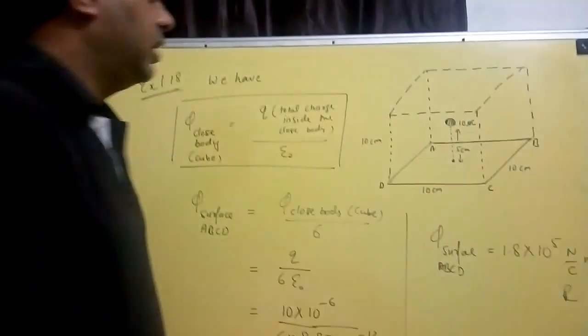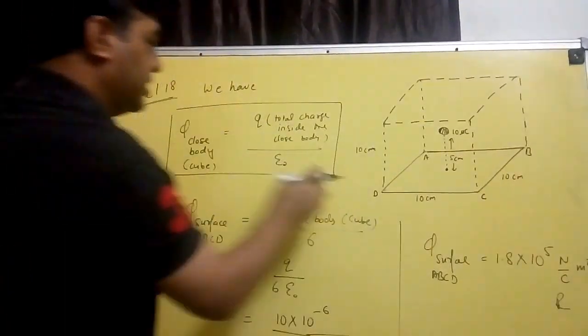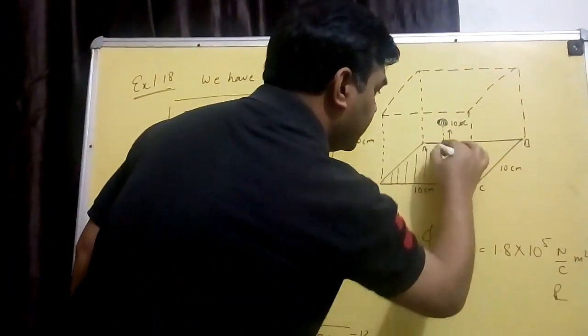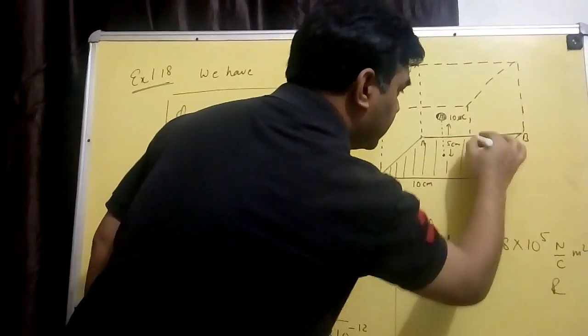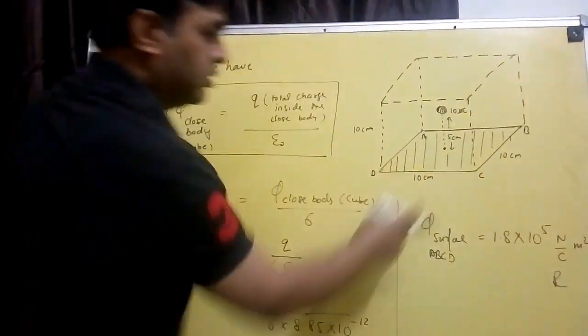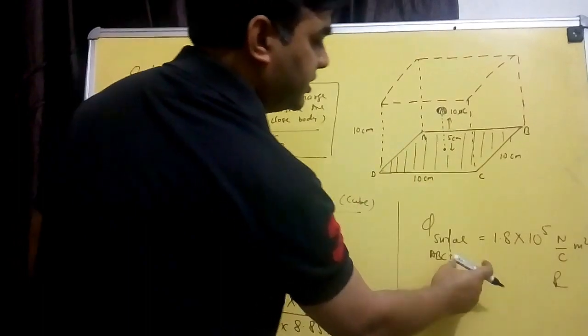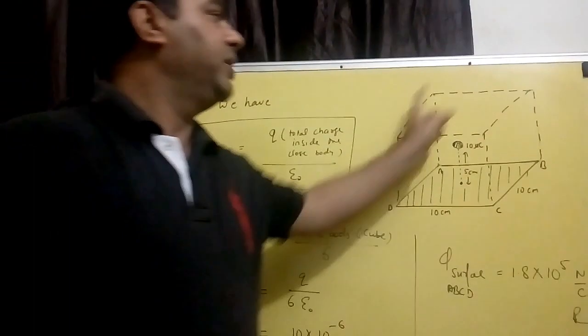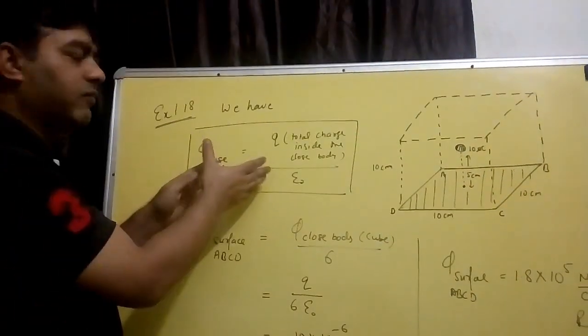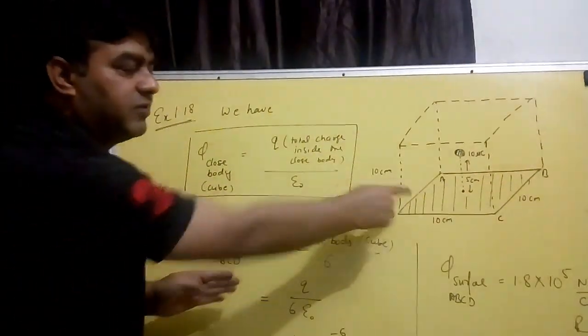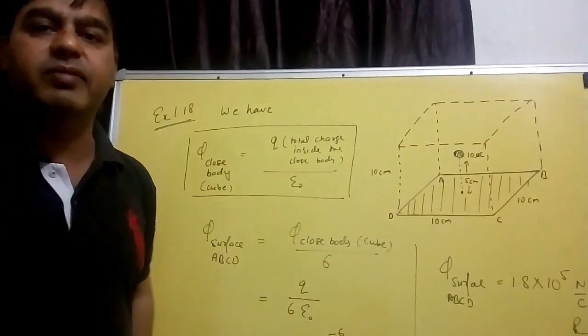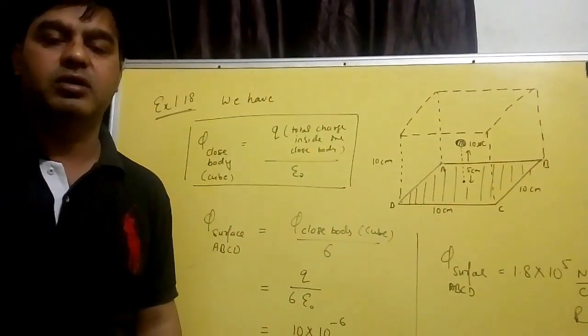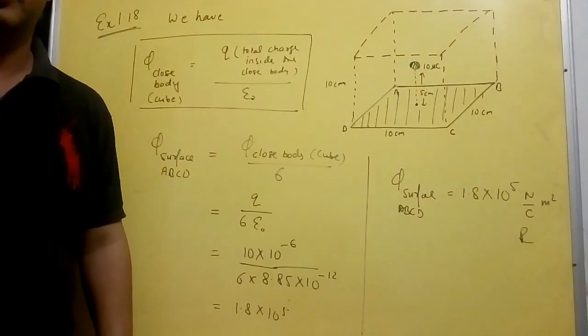This is your required answer. The whole body's total flux we found, but if we talk about the surface area ABCD, it will be this much flux. This is a simple technique. First we made a cube, found the cube's flux, then divided by 6 surfaces. This is the answer to your question.